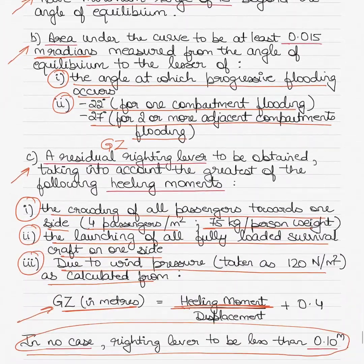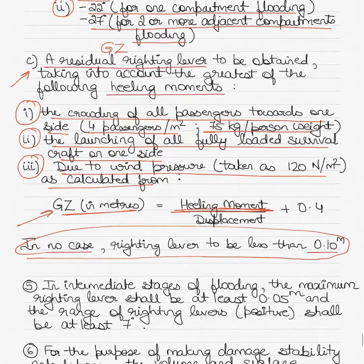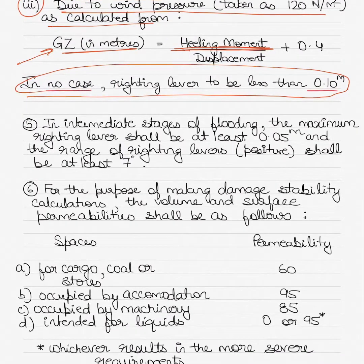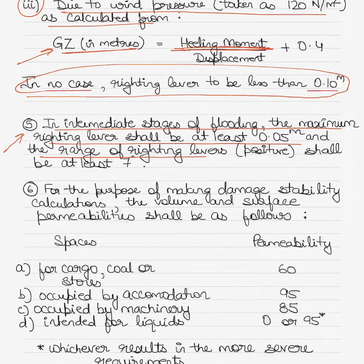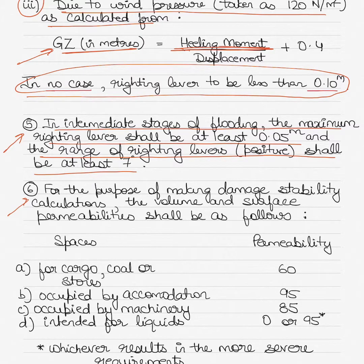In intermediate stages of flooding, the maximum righting lever shall be at least 0.05 meters and the range of positive righting levers shall be at least within seven degrees. That range between the lowest and highest values of the righting lever should be about 0.7 degrees.